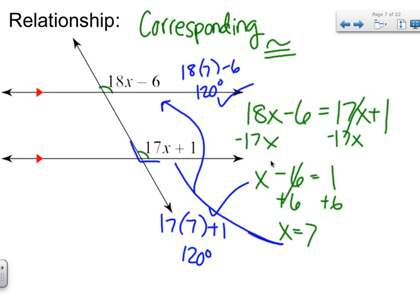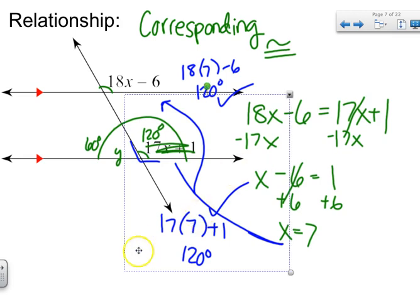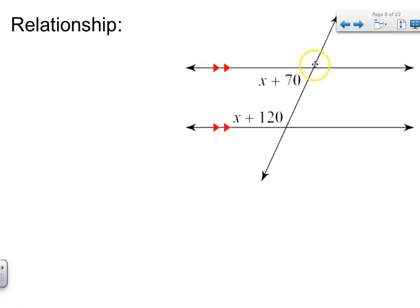If you had another variable y over here, and I know this angle is 120 degrees, I have a linear pair. So I would know that y equals 60 degrees. Again, if you know one angle, you know all of the rest of the angles.